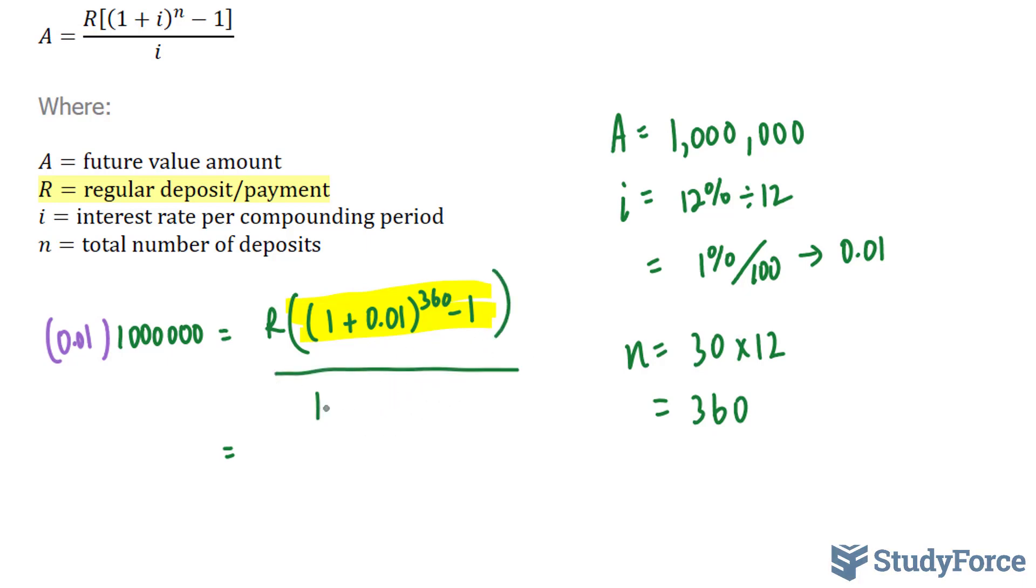And if we do that, I'm just going to erase what we have here. We end up with (1 + 0.01) to the power of 360 minus 1. And this cancels out, and we're going to have the same thing on this side.